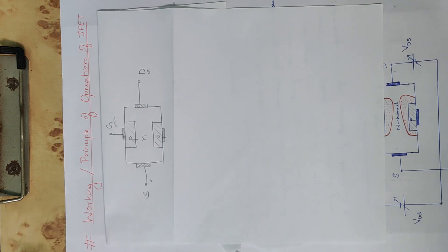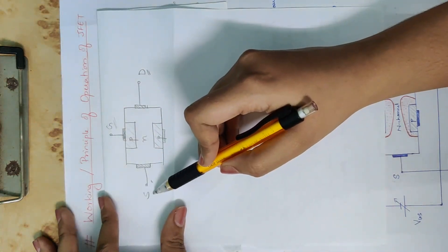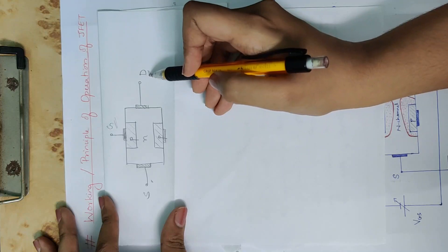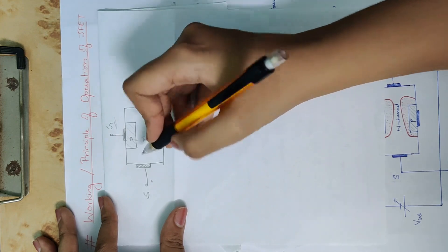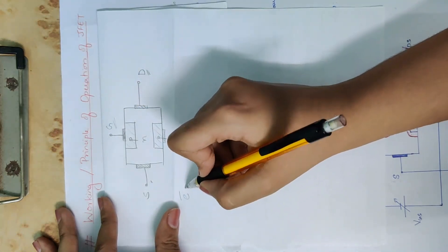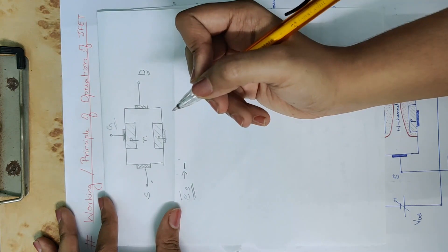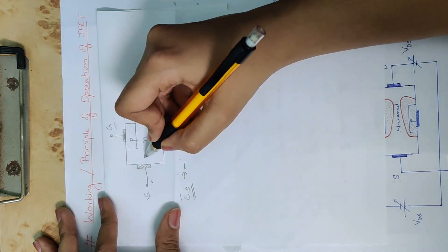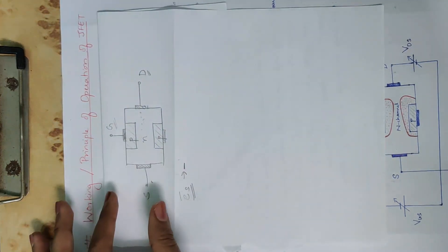For BJT, the base-emitter junction requires a voltage across it to turn on the transistor. Similarly, we apply voltage now. S is source and D is drain. In the N-channel, the majority carriers are electrons. Electrons will move from source to drain.